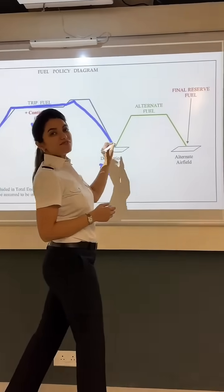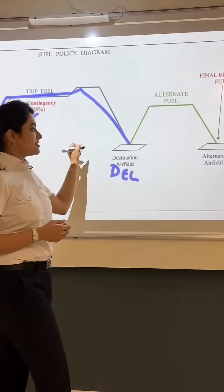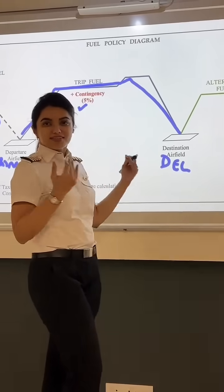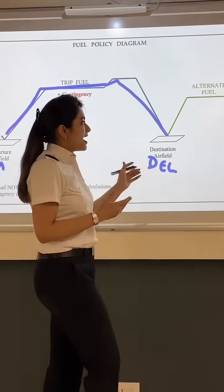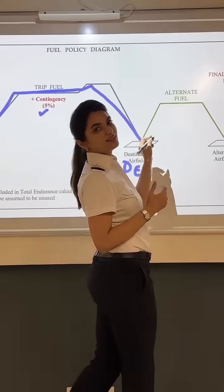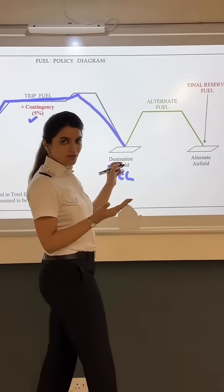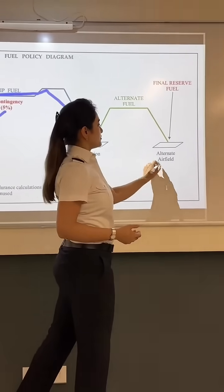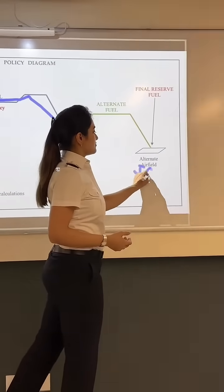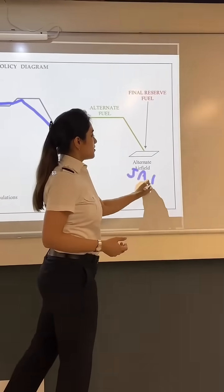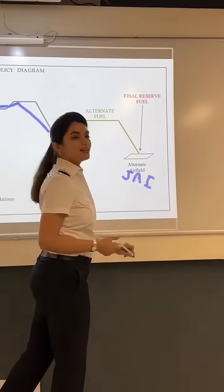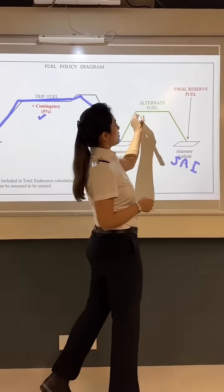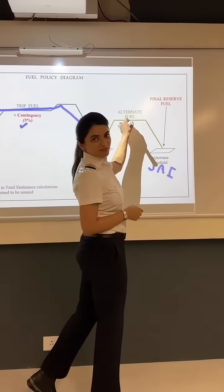If the weather at the destination is bad — say there is a thunderstorm or low visibility and a diversion is required — then you will have to divert to an alternate airport. For that, you need alternate fuel.